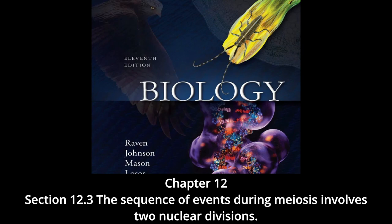Prophase 1 is traditionally divided into five sequential stages: leptotene, zygotene, pachytene, diplotene, and diakinesis. Leptotene: chromosomes condense tightly. Zygotene: a lattice of protein is laid down between the homologous chromosomes in the process of synapsis, forming a structure called a synaptonemal complex.